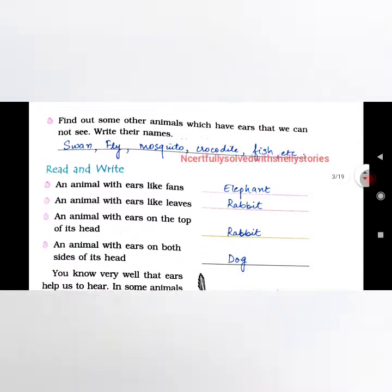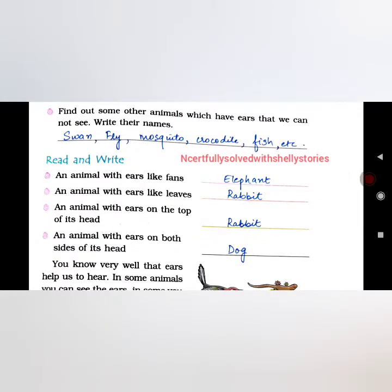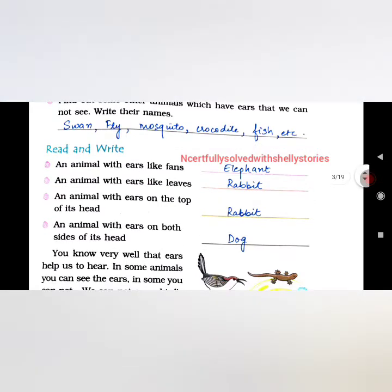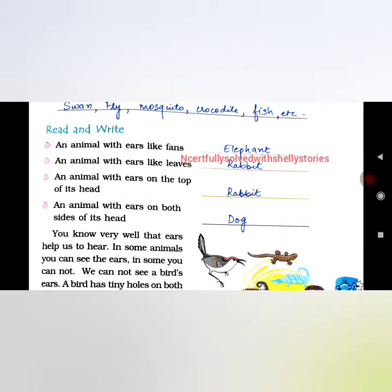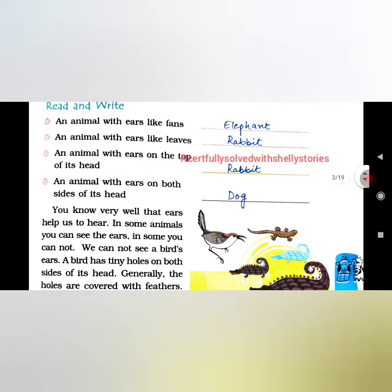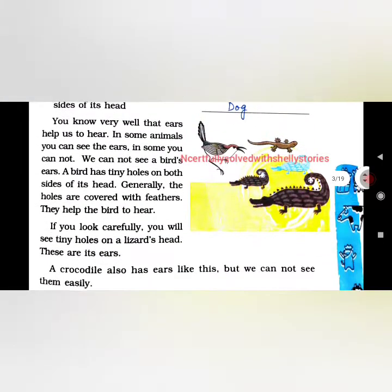Read and write: An animal with ears like fans — elephant. Which animal has ears like leaves? Like rabbits. An animal with ears on the top of its head — rabbit. An animal with ears on both sides of its head.